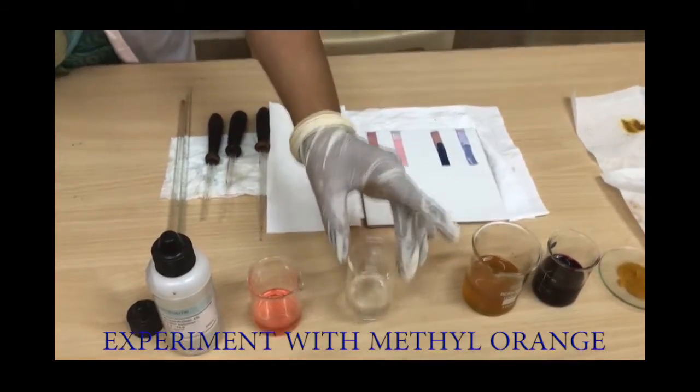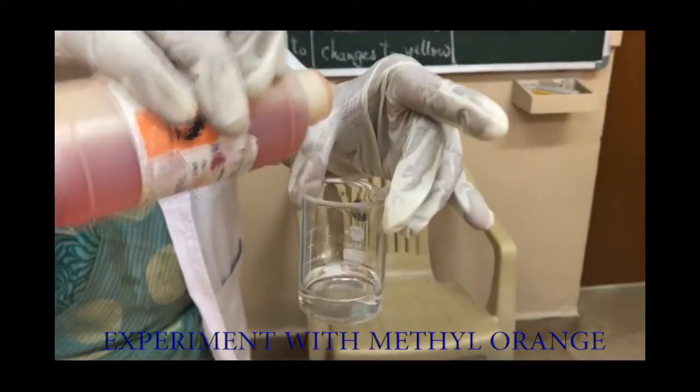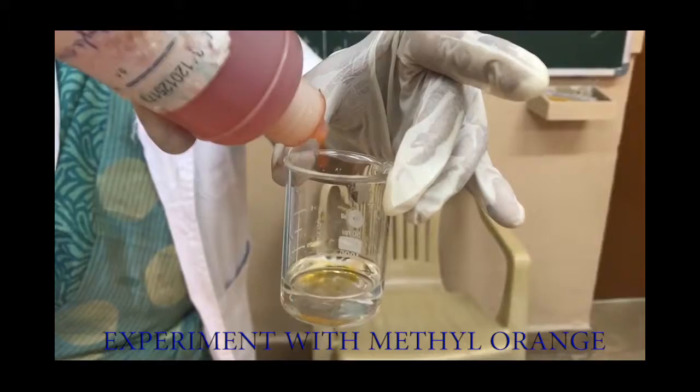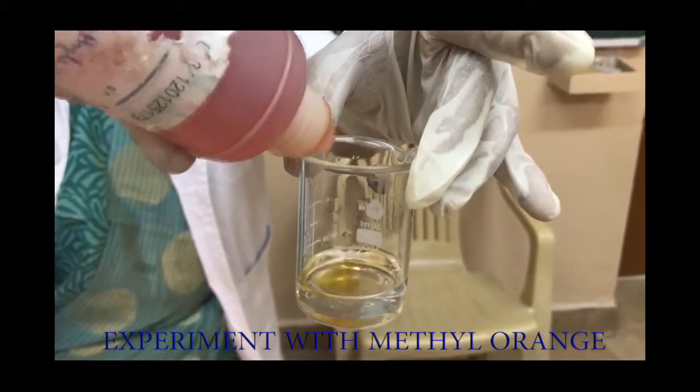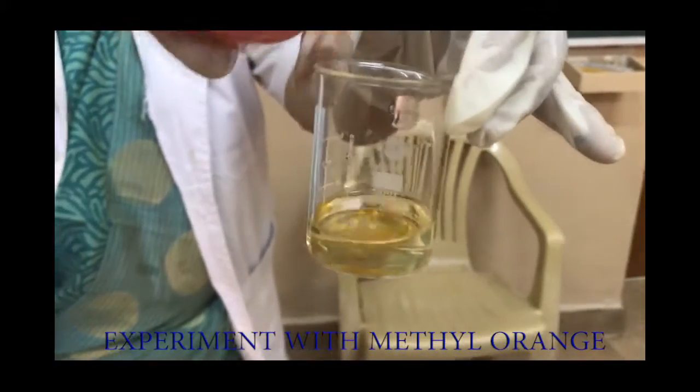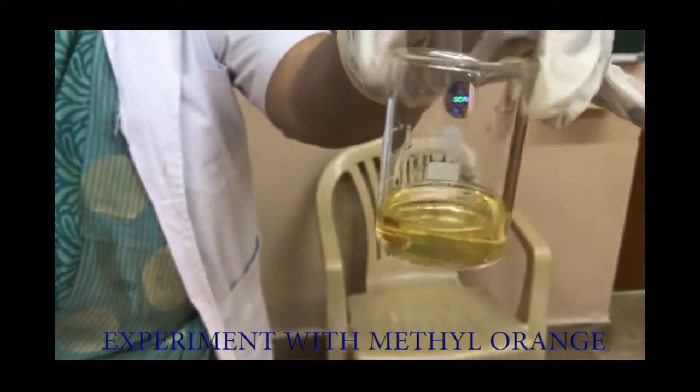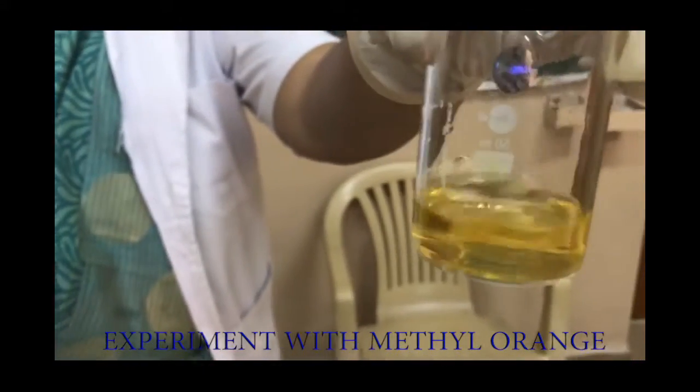Let's take sample 2. Add a few drops of methyl orange to it. Now see the color change. The color changes to yellow. It shows the presence of a base.